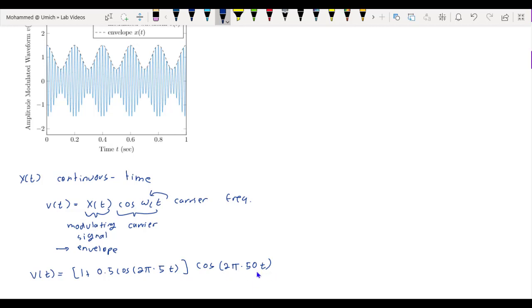We have our carrier at that carrier frequency of 50 hertz, and then our envelope x(t) is 1 + 0.5 cos(2π·5t), which is a shifted sinusoid at 5 hertz. And as you can see, the frequency of our modulating signal x(t) is much lower than the frequency of our carrier.